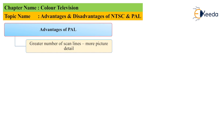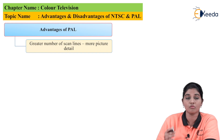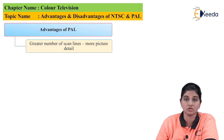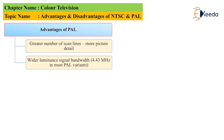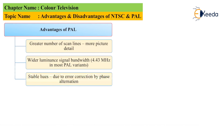The first advantage of PAL is a large number of scan lines, therefore more picture detail is provided on the screen. The PAL system also uses a frequency of 60 hertz. The next advantage is a wider luminance signal bandwidth, which is approximately equal to 4.43 megahertz. PAL also provides stable hue because, due to error correction by phase alteration, the phase is shifted in the picture subcarrier, so the hue variation problem is avoided.